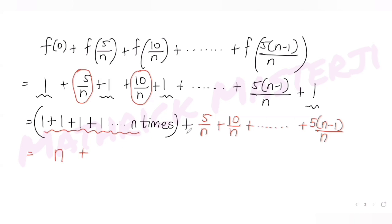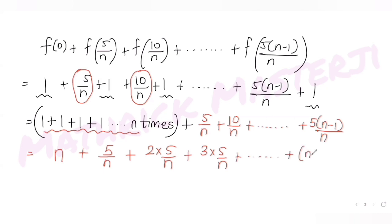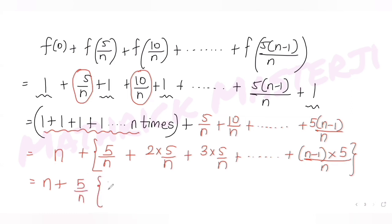From the second term onwards, I have 5 over n, then 2 times 5 over n, then 3 times 5 over n, and so on till n minus 1 times 5 over n. Taking 5 over n common from all these terms, I am left with 1 plus 2 plus 3 and so on till n minus 1.